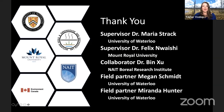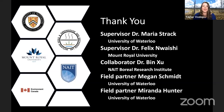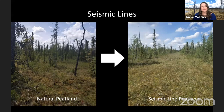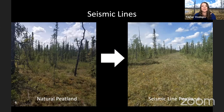I would like to start out by thanking my funding sources, as well as my supervisors, collaborators, and field partners, and acknowledge that my project takes place within Treaty 6 and the Métis Nation of Alberta Region 4. My research is focused on the impact of seismic lines. In Alberta, we have over 345,000 kilometers of seismic lines that run through our peatlands. Seismic lines are created for oil and gas exploration — they remove the vegetation to bring seismic equipment onto the landscape. Seismic lines began to be created in the early 1950s, and to this day we see this impact on the landscape.